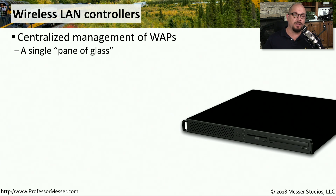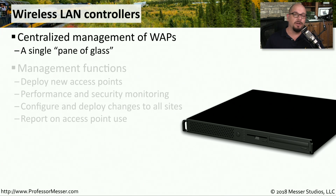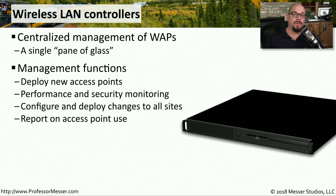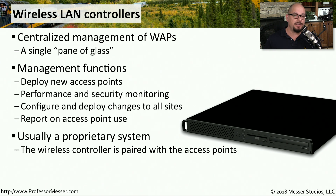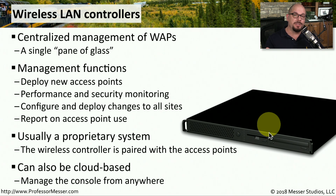In a large facility like a hospital or university, there are a large number of wireless access points to manage. To centralize this management, organizations use a wireless LAN controller, which provides a central management console supporting hundreds or thousands of access points. From the controller, you can deploy new access points, change configurations, or update software. This is usually a proprietary system — a Cisco access point typically uses a Cisco wireless LAN controller. Some wireless LAN controller software also runs in the cloud, letting you manage all access points from anywhere.